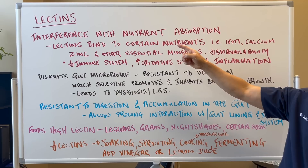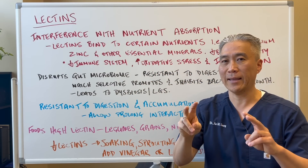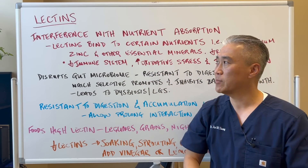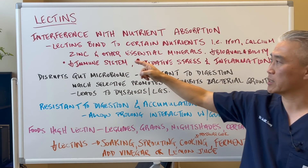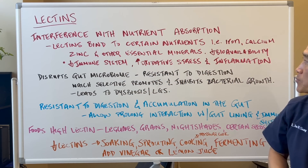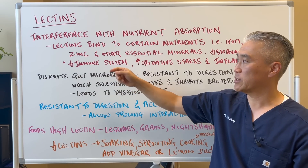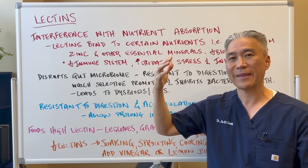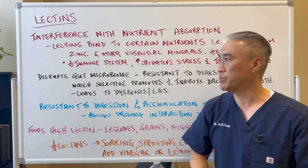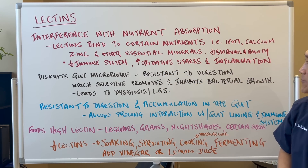Lectins can interfere with nutrient absorption. They are sometimes called anti-nutrients because lectins bind to certain nutrients like iron, calcium, zinc, and other essential minerals, decreasing their bioavailability. This also decreases immune function because you don't have the raw materials to sustain your immune system, and it increases oxidative stress and inflammation.